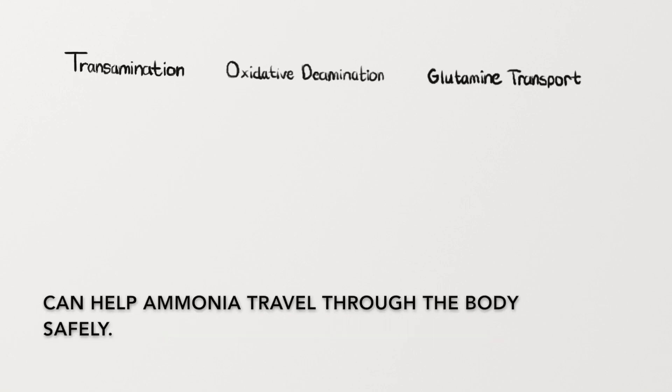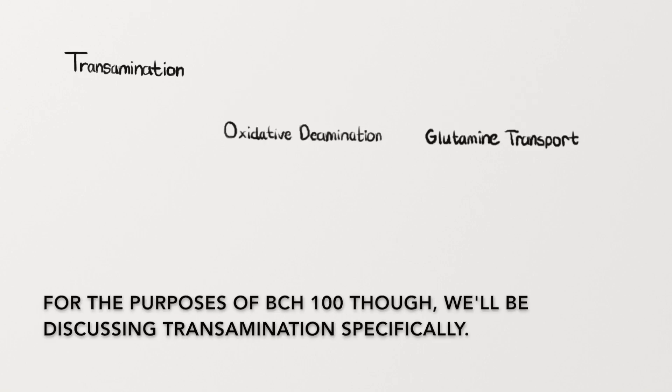So, methods like transamination, oxidative deamination, and glutamine transport can help ammonia travel through the body safely. For the purposes of BCH100 though, we'll be discussing transamination specifically.